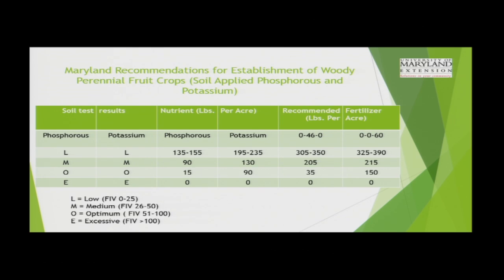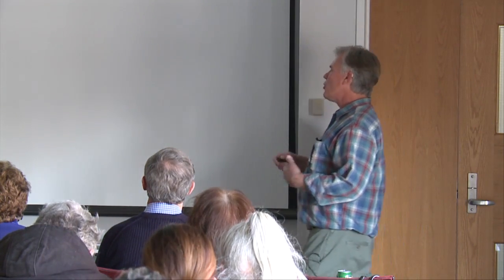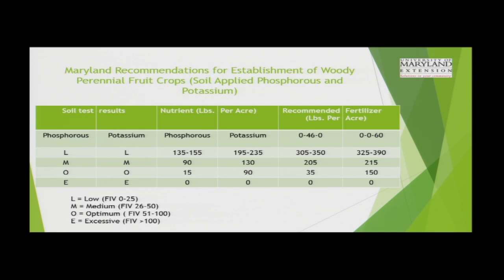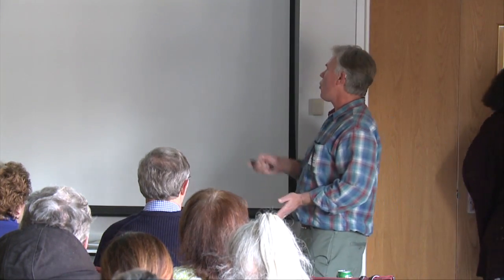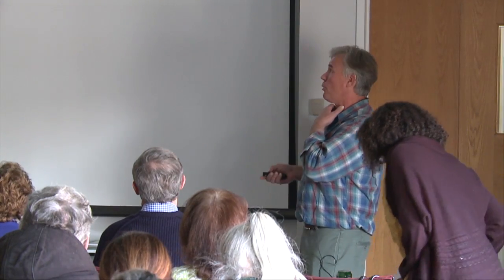So you get your soil test back — it says medium for phosphorus and potassium. Recommendations are 90 pounds of phosphorus and 130 for potassium. If you want to use common products like triple phosphate or potash, this tells you how much: about 200 pounds of the phosphorus product and a little over 200 pounds of the potassium product. You want to do it before you plant the trees because it gives you a great opportunity to work it into the ground. I will routinely get my fertilizer dealer to blend in two pounds of boron with my phosphorus and potassium, since boron is inherently low in Maryland soils.